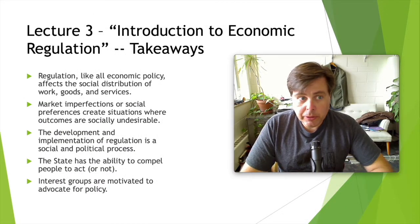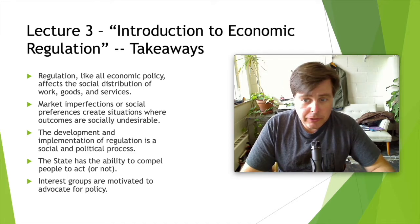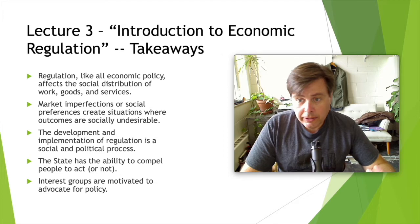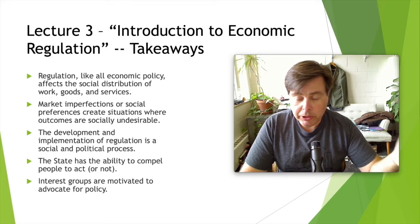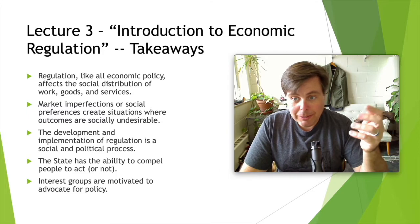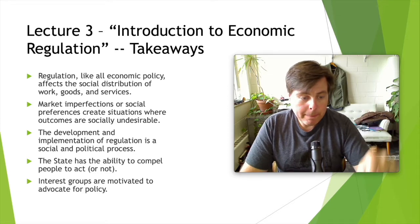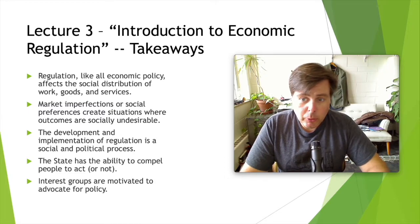The third lecture introduced some basics of economic regulation. We introduced a couple of assumptions about how the institutions associated with regulations work. The first is that the state or government can compel people to act — it can tell us, within degrees of other laws, the extent to which we can do things economically or not. For example, we can produce cereal for people to eat, but it needs to meet certain safety requirements; we cannot sell most illegal drugs.